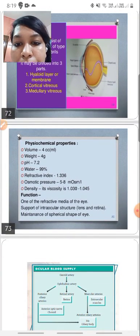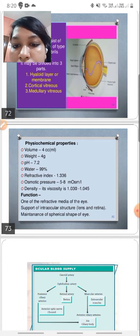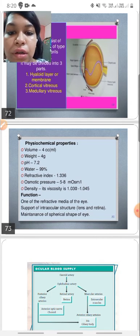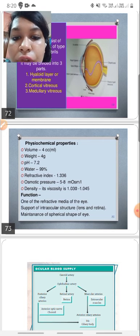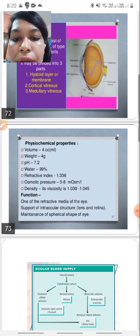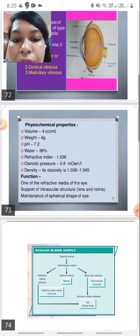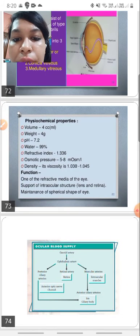In the physiochemical properties, the volume of the vitreous is 4 ml and the weight is 4 grams. It is easy to remember. The pH is 7.2 and it is composed of 99% water. The refractive index is same as that of aqueous, which is also 1.336. The osmotic pressure is 5 to 8 milliosmol per liter and it's a fairly viscous structure, its viscosity being 1.030 to 1.045.